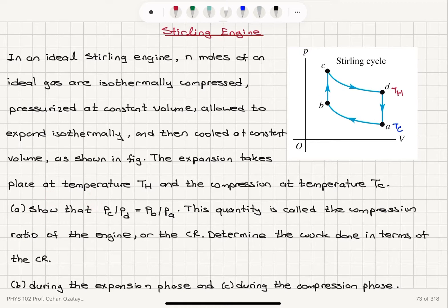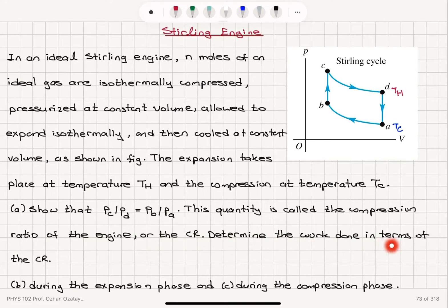Show that the ratio of the pressures PC to PD is PB to PA. This quantity is called the compression ratio of the engine, or the CR. Determine the work done in terms of the compression ratio — Part B during the expansion phase and Part C during the compression phase.